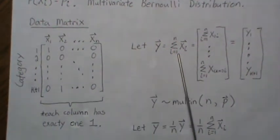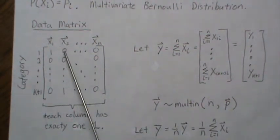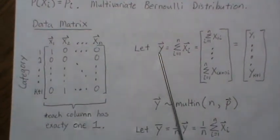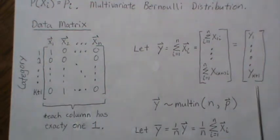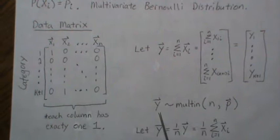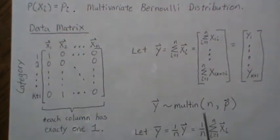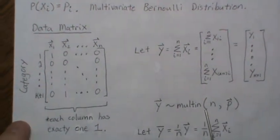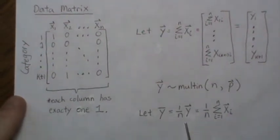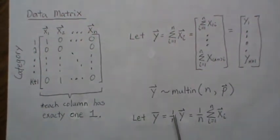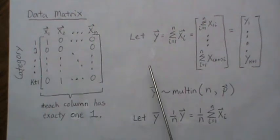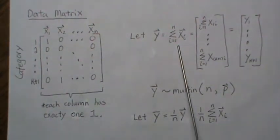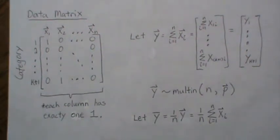Now let's look at the sum of the X vectors, which is essentially taking the row sums. We're going to call that Y, and when you add vectors you add them component-wise, generically calling it Y1 through YK+1. It can be easily shown that Y is a multinomial distribution with parameters n and P, where n is the number of vectors you summed. We let Y-bar be the mean of these X vectors. Y being a multinomial distribution is actually the sum of these multivariate Bernoulli distributions, and whenever you're adding independent observations, the central limit theorem kicks in.